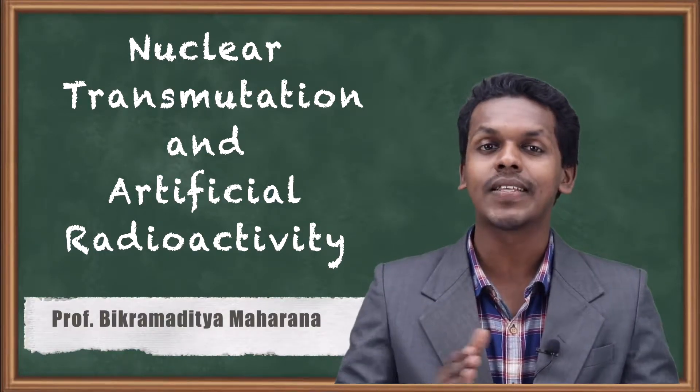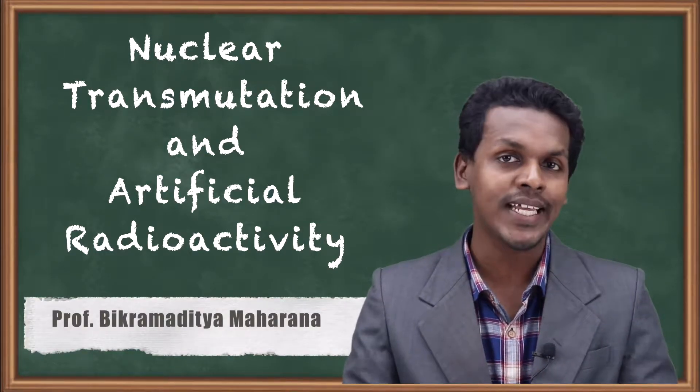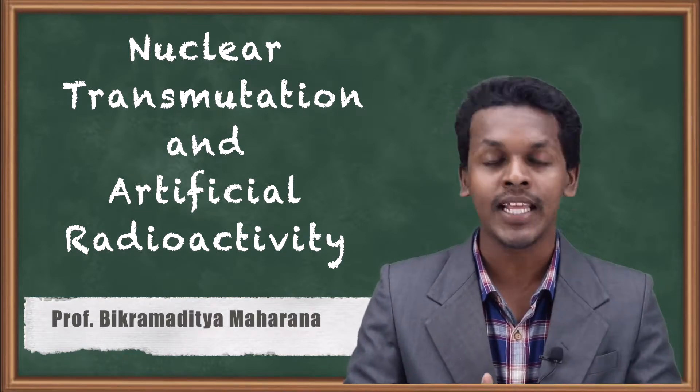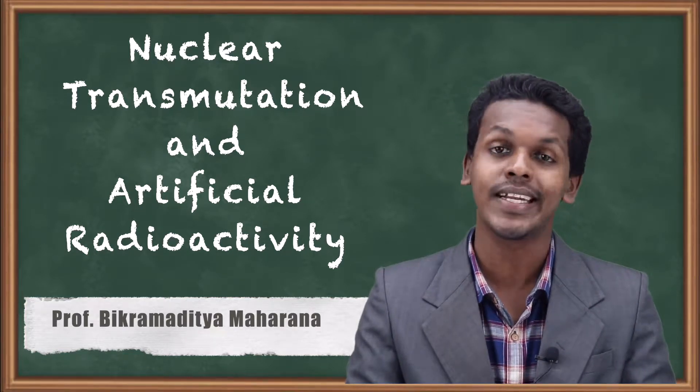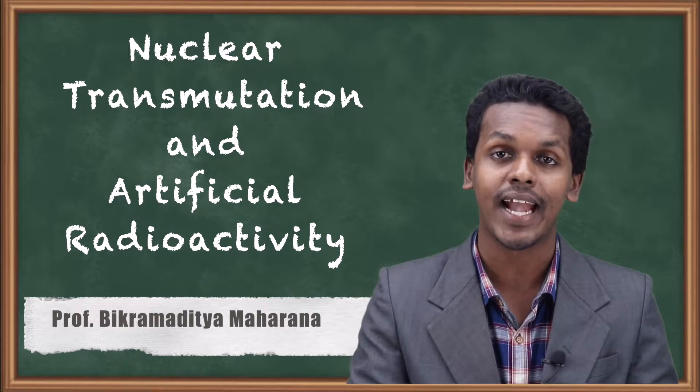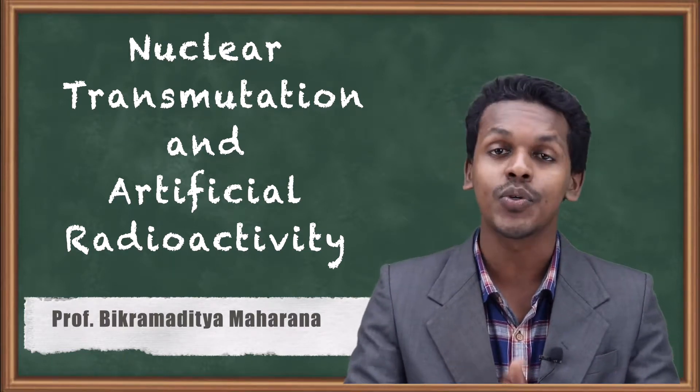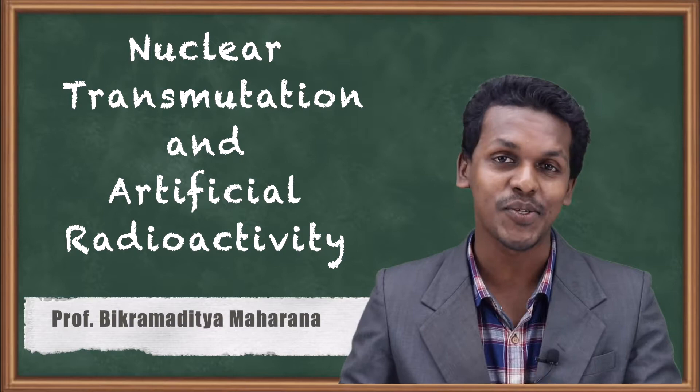Hello friends, in the previous topic we discussed the modes of decay - alpha, beta, and gamma. Here we are going to talk about nuclear transmutation and artificial radioactivity. So what are these two terms? Let me talk about that in this topic.